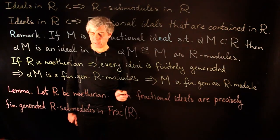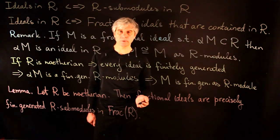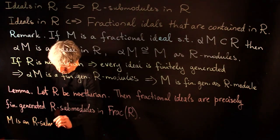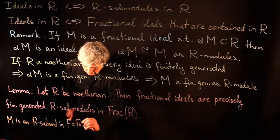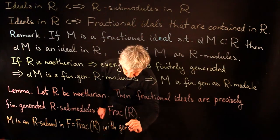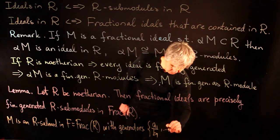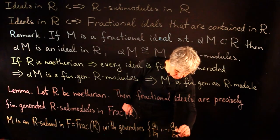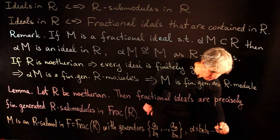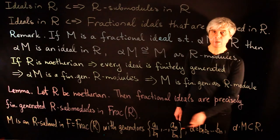We already saw that if R is Noetherian and M is a fractional ideal, then M is finitely generated as an R-submodule. Conversely, if M is an R-submodule in the field of fractions of R with generators a₁/b₁, …, aₙ/bₙ, then if we take α to be the product b₁·b₂·…·bₙ, then α·M will be inside R.